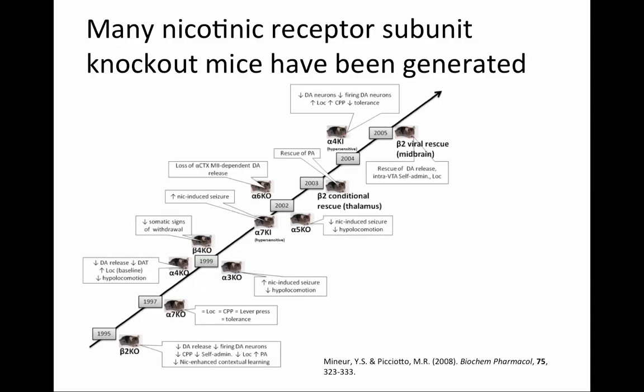This figure shows all of the nicotinic receptor subunit knockouts that were generated, and this figure was published in 2008, so there are even more knockouts since then. You can see some of the altered behaviors and physiological functions compared to the control mice. For example, the alpha-5 knockout has reduced hyperlocomotion and reduced nicotine-induced seizures compared to the control mice.